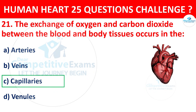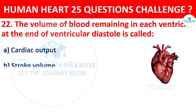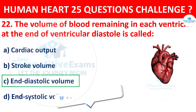Question number 22. The volume of blood remaining in each ventricle at the end of ventricular diastole is called? Options: Cardiac output, Stroke volume, End diastolic volume, or End systolic volume. The correct answer is C, that is End diastolic volume.